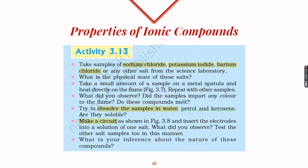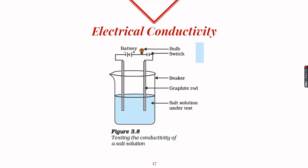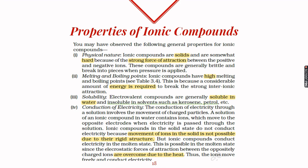To check conductivity, we make solutions of each salt and place them inside a beaker connected to two electrodes, a battery, a bulb, and a switch. As soon as we switch on, the bulb starts glowing in all three cases. This shows that the solutions of all three salts are good conductors of electricity.